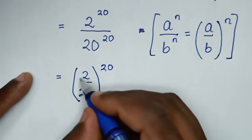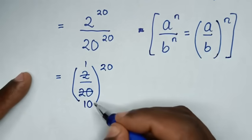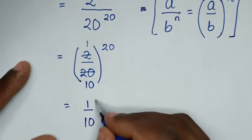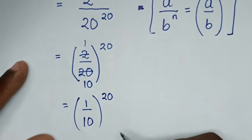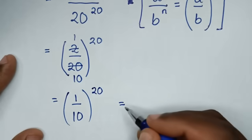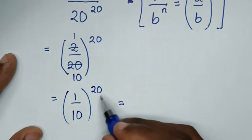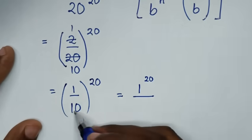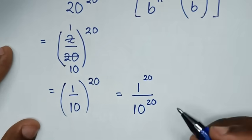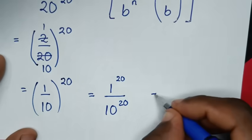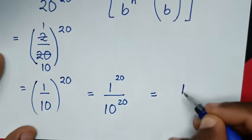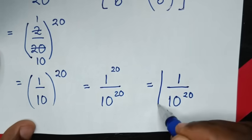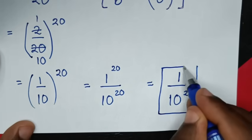Now, to simplify: 2 cancels to give 1, and 20 cancels to give 10, so it will be equal to 1 over 10, then bracket power of 20. Into here, we will take power of 20 in the numerator and in the denominator, so it will be 1 power of 20 over 10 power of 20. Since 1 power of 20 is 1, we get 1 over 10 power of 20, which is our final answer.